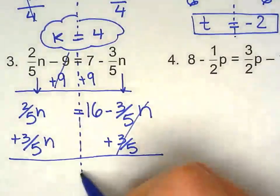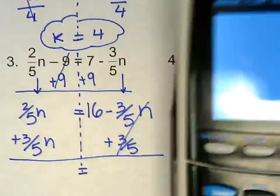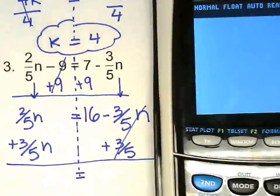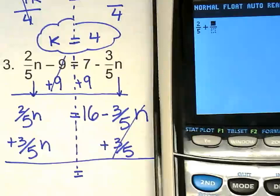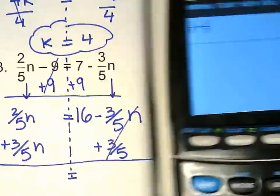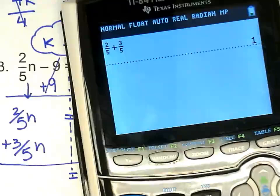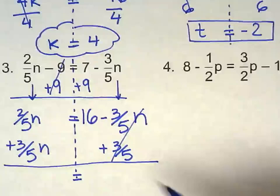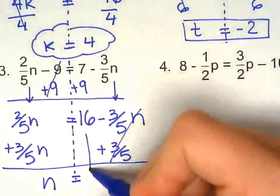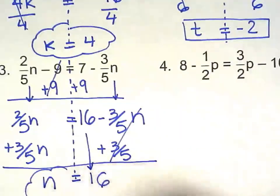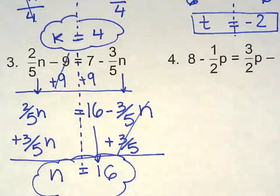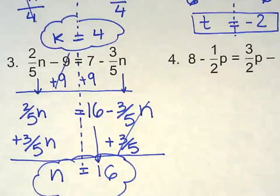2 fifths. These two go bye bye. 2 fifths plus 3 fifths. How sweet. It's 1. So 1n equals 16. You didn't think this one was going to be that easy. Because when you see fraction you're like, uhh. But it's not bad.